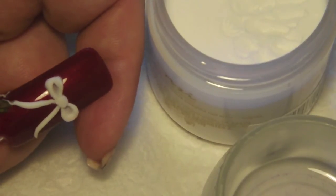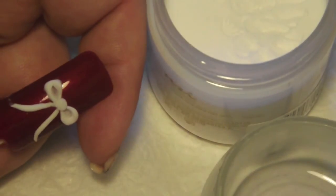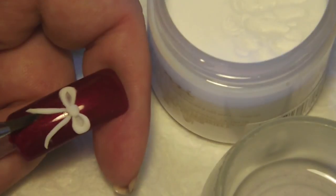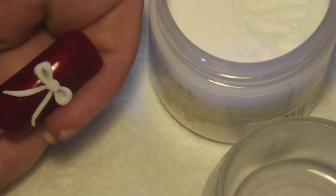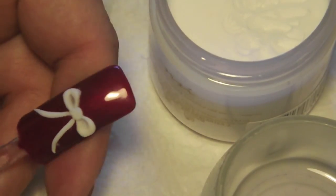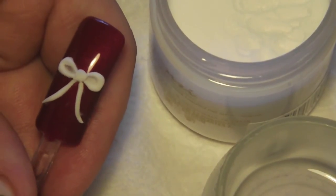And then if you need to remove any excess, you can go ahead and do that with your brush. Sometimes dipping into monomer helps clean it up. And then you're just going to try to get the shape that you want. And that's it. And that's how to do a 3D bow.